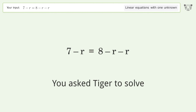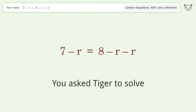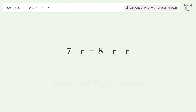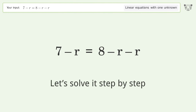You asked Tiger to solve. This deals with linear equations with one unknown. The final result is R equals 1. Let's solve it step by step.